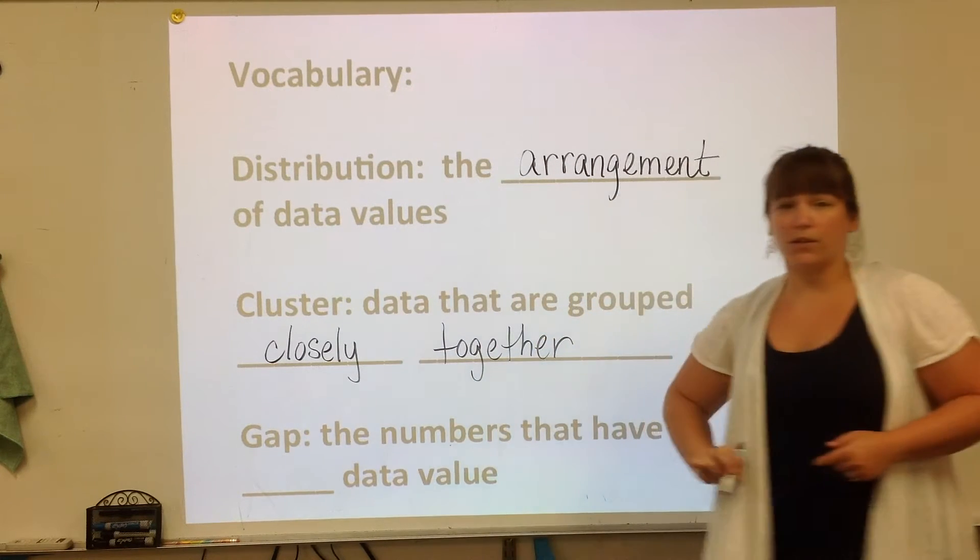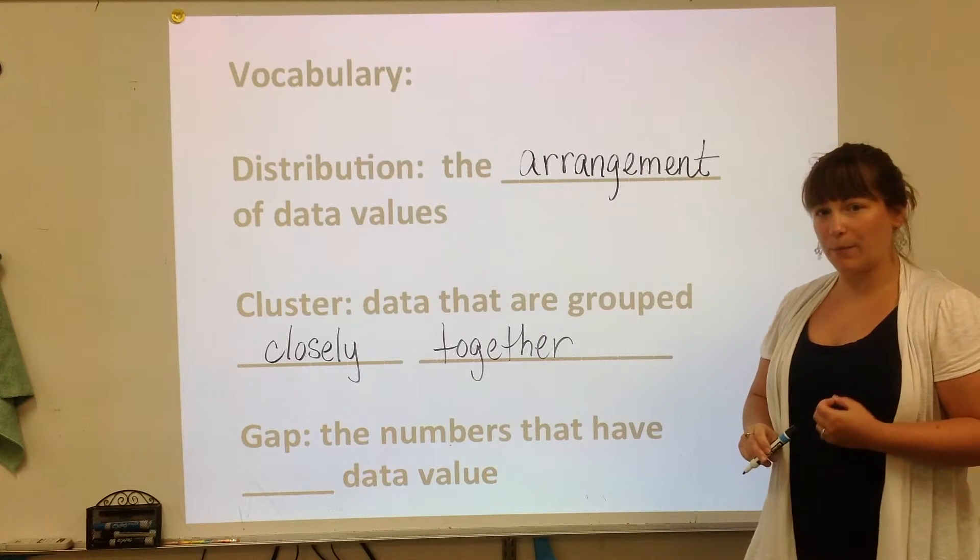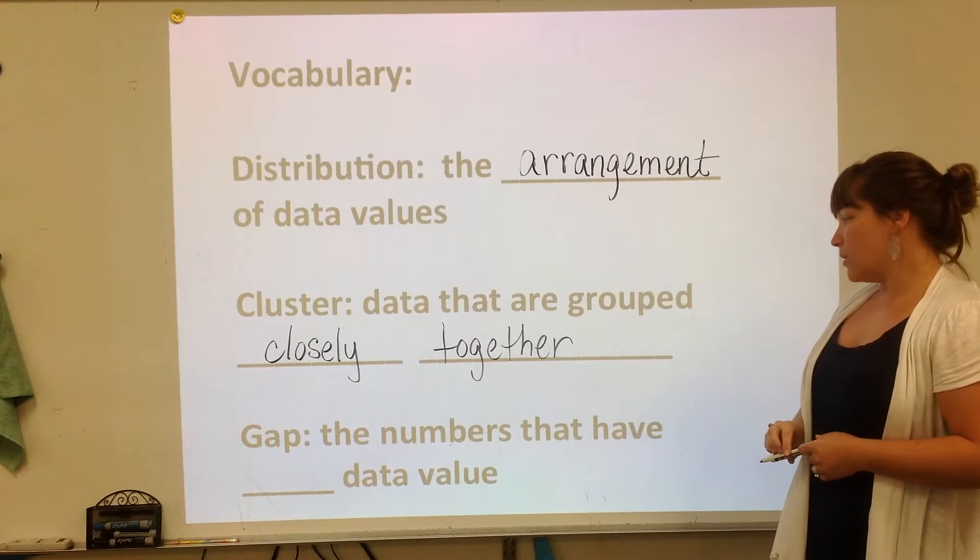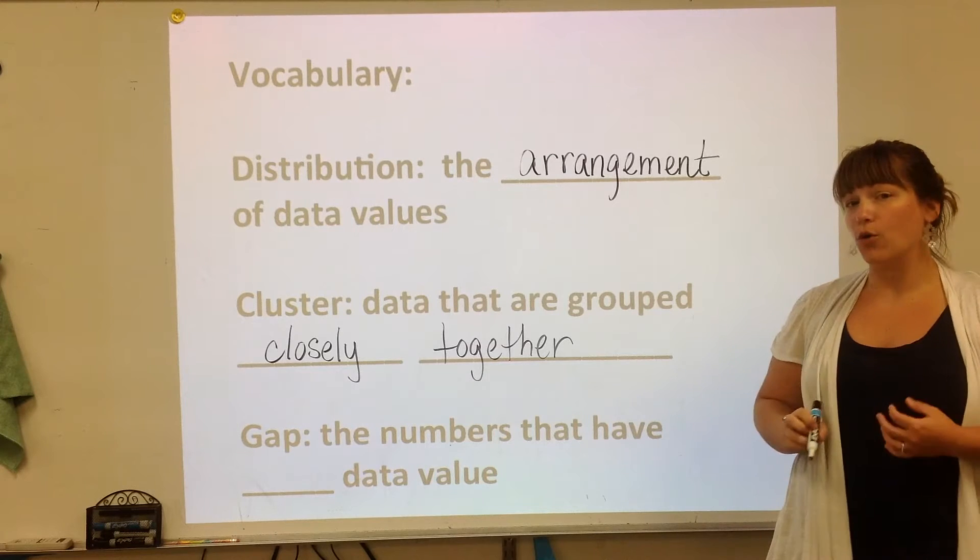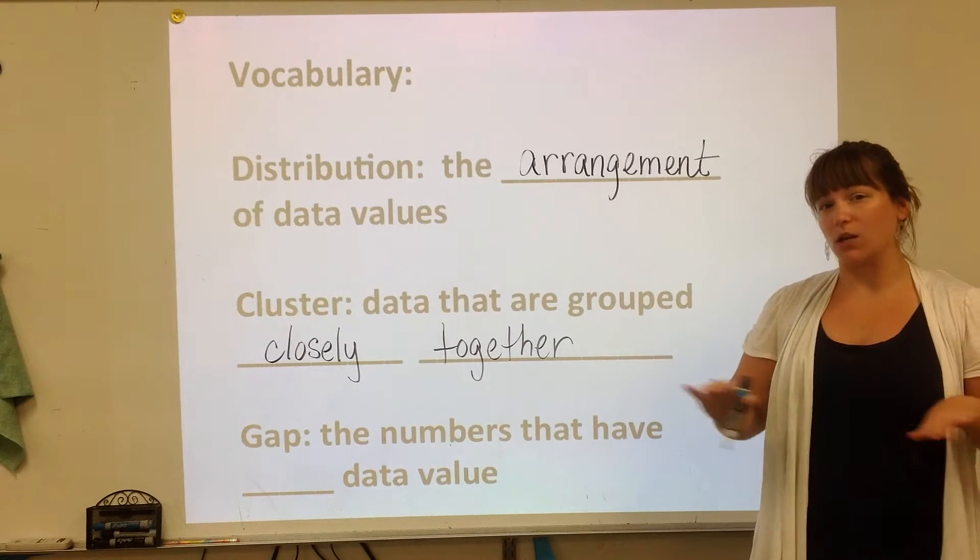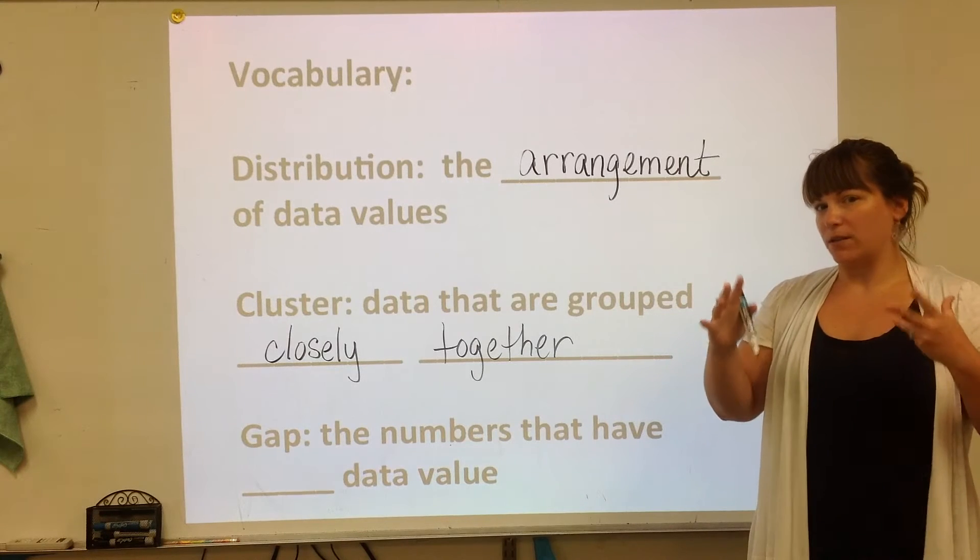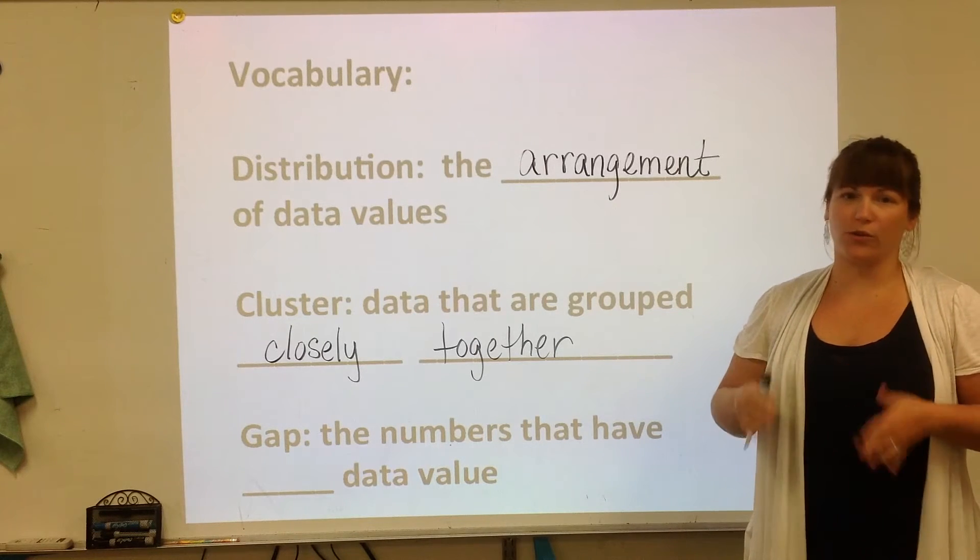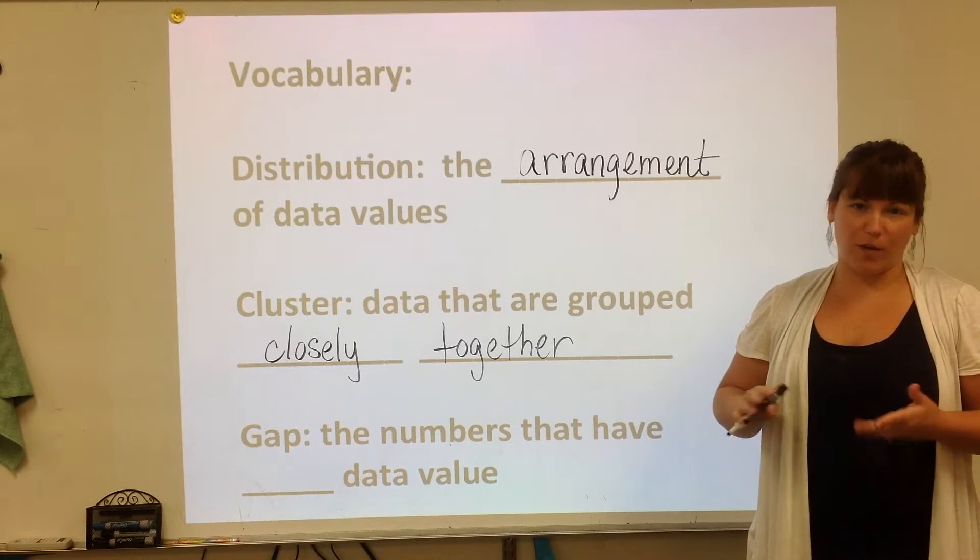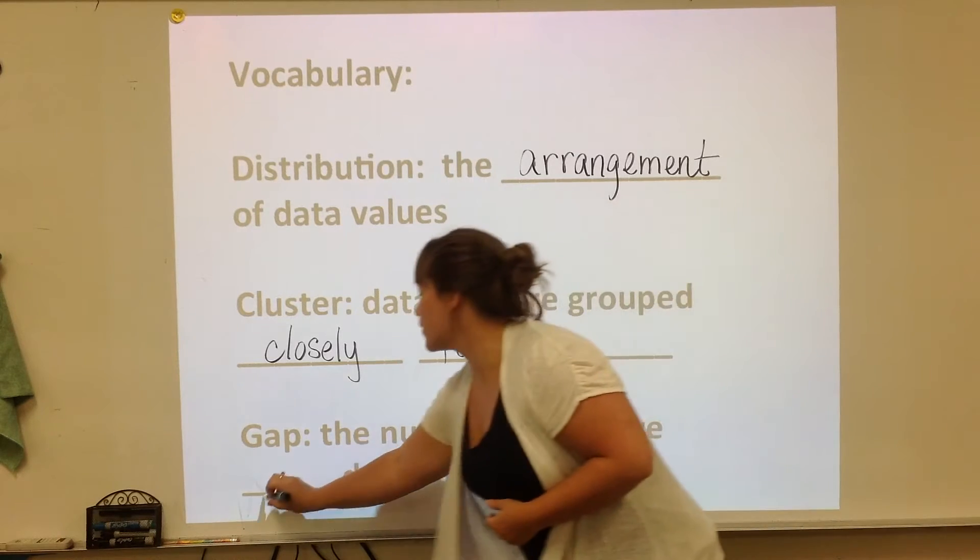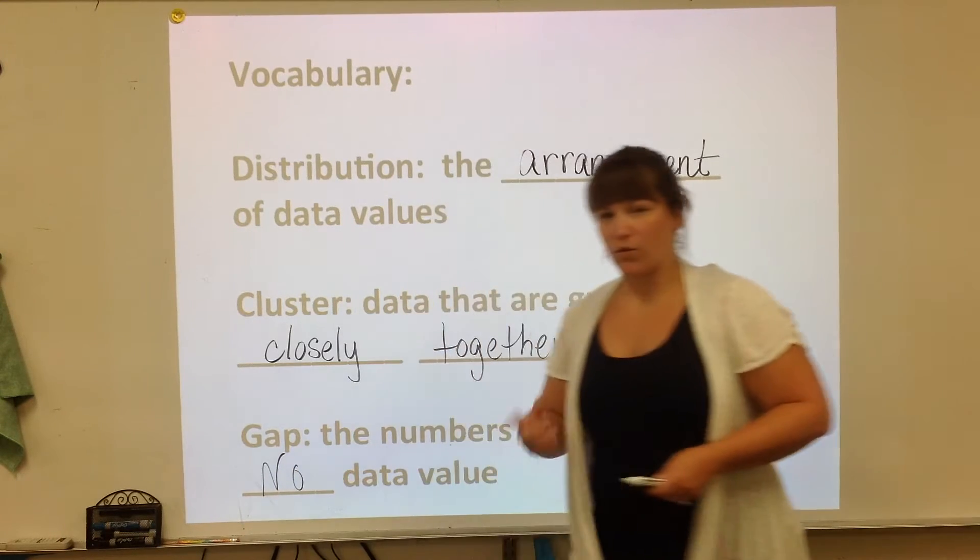The third vocabulary word is called a gap. A gap is when the numbers have no data values, meaning the scale on the bottom or the number line has nothing above it. Either no x if it's a line plot, or no bar if it's a histogram or a bar graph. So just fill in the word no and move on to the next one.